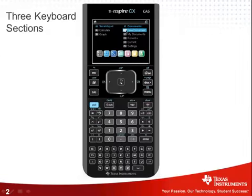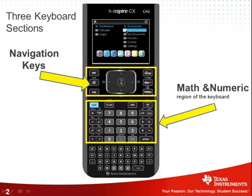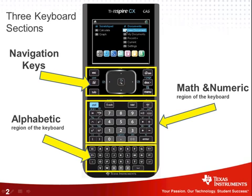What we're looking at here is the TI-Nspire CX CAS. CAS stands for Computer Algebra System. Let me just point out the three keyboard sections. Right here are the navigation keys, enabling you to navigate around. And then we have the math and numeric region of the keyboard, and finally the alphabetic region of the keyboard.